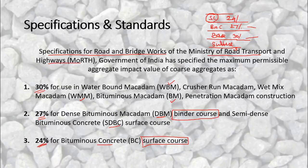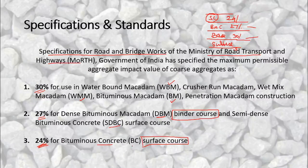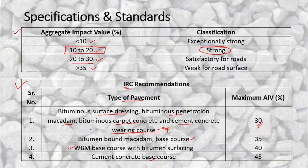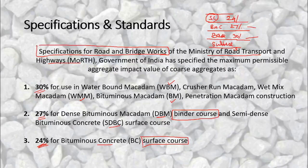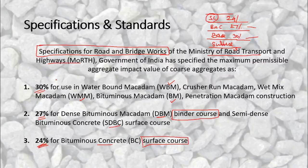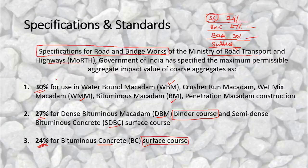As per IRC as well as MoRTH, these aggregates with AIV of 11.48% can be used in the wearing course as well as in lower layers. On site, MoRTH specifications are generally preferred — those specifications take precedence over others. So these are the aggregates that may be used in the surface course for pavement construction.